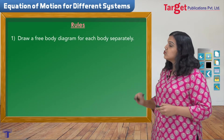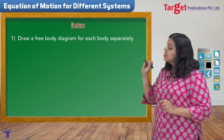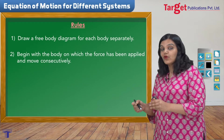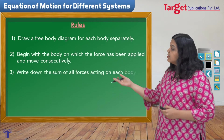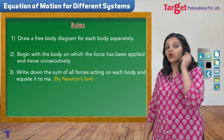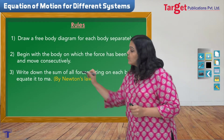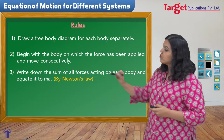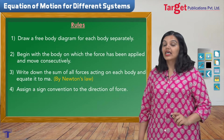The first rule says that you draw a free body diagram of every body separately. The second rule says that you begin with the body on which the force is applied and then move consecutively. The third rule says that you write down the sum of all forces acting on each body and equate it to MA — in accordance with Newton's law. The fourth rule says that you must assign a sign convention to the direction of force.